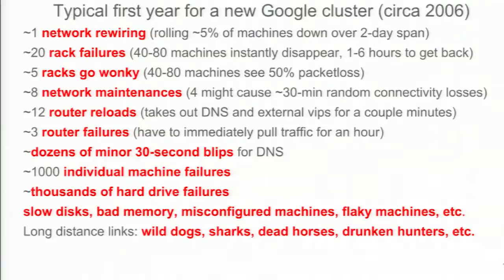This is from a bit later in Google's development — the typical first year of problems you see at a cluster of maybe 10,000 machines. There are all kinds of problems, both within the building and within the network. Among the problems that have knocked out long-distance links for us: wild dogs, sharks, dead horses, and drunken hunters.